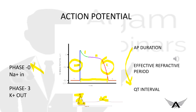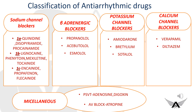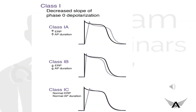Phase 0 corresponds to the QRS complex and phase 3 corresponds to the T wave on the ECG. This graph shows a single ventricular myocyte whereas ECG shows the whole ventricle. There are four classifications of antiarrhythmic drugs including one miscellaneous: Class 1 — sodium channel blockers (with subclasses 1a, 1b, 1c), Class 2 — beta adrenergic blockers, Class 3 — potassium channel blockers, and Class 4 — calcium channel blockers.